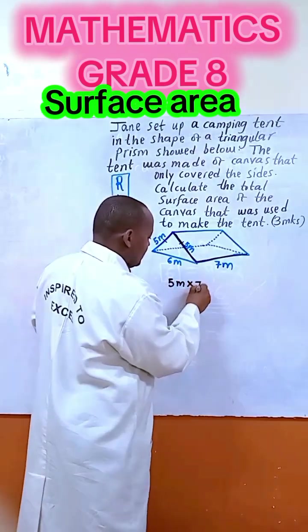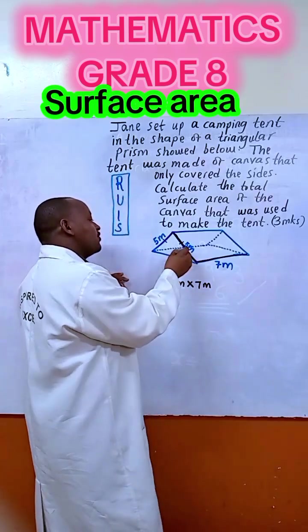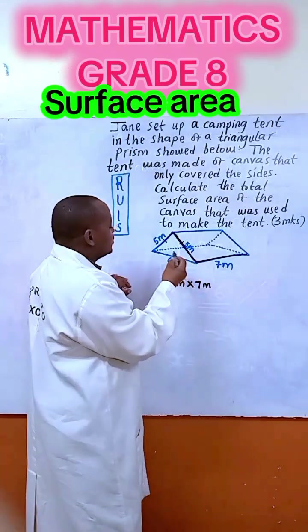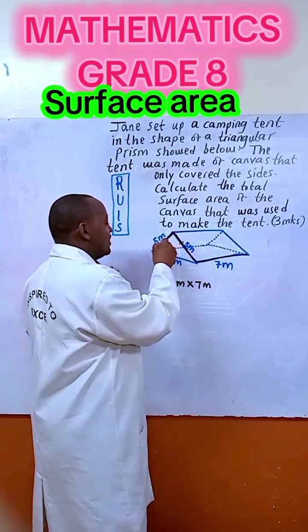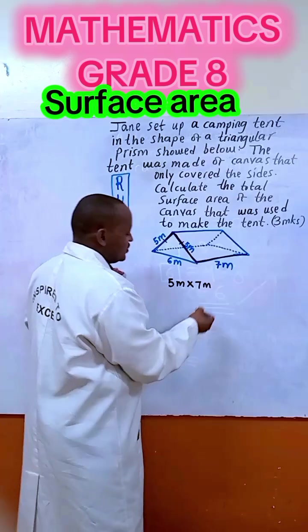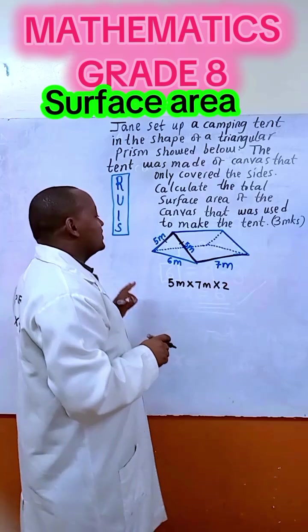It is 5 by 7 meters, and there are two because this is 5 meters and this is also 5 meters. So they are equal. So that is 5 meters by 7, so you can say times 2. Then after getting that surface.